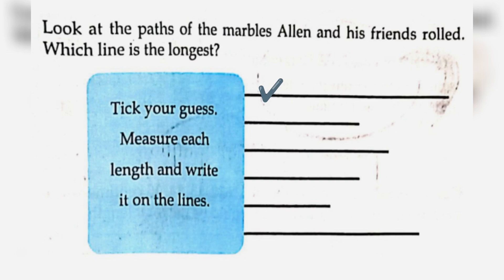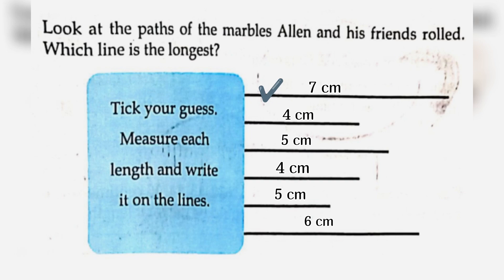Let's write the measurements. The 1st line is equal to 7 centimeters. The 2nd line will be 4 centimeters. The 3rd line will be 5 centimeters. The 4th line will be 4 centimeters. The 5th line will be 5 centimeters. The 6th line will be 6 centimeters. So the longest line will be the 1st line.